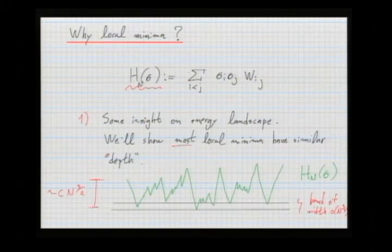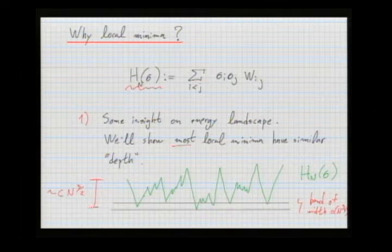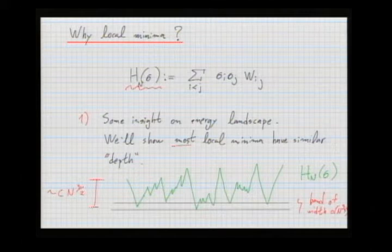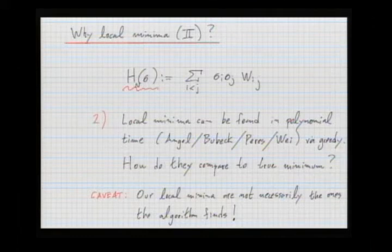Our questions are simple: how many local minima are there, and what is the typical energy of a local minimum? The motivation is to understand the energy landscape of this random function. It will turn out that most local minima have similar depth — essentially all local minima lie within a very small band around a fixed constant value. Another reason to be interested in local minima comes from a recent paper by Angel, Bubeck, Peres, and Wei.